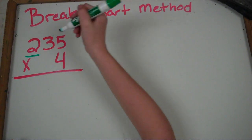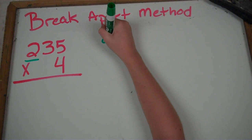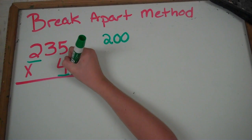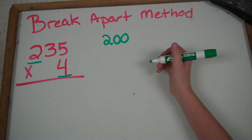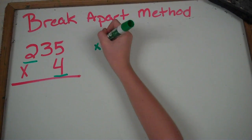Since the 2 in 235 is in the hundreds place, it's 200. So you bring it over here, and since the 4 down here is in the ones place, it stays as a 4. And you times it.